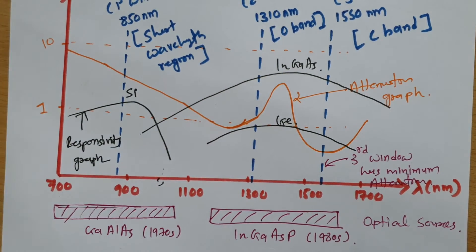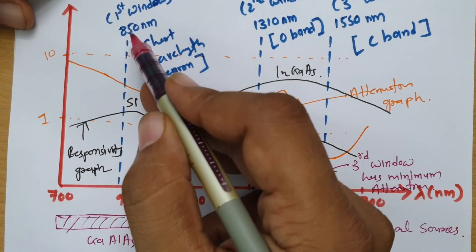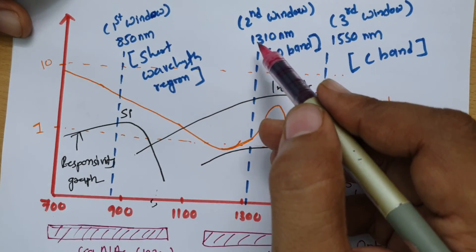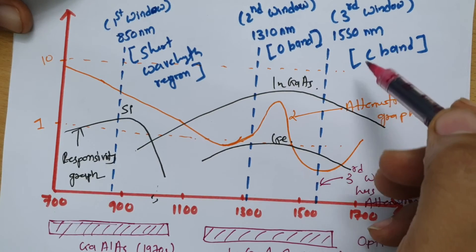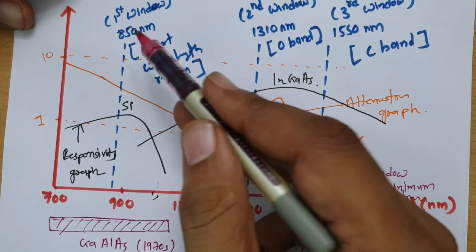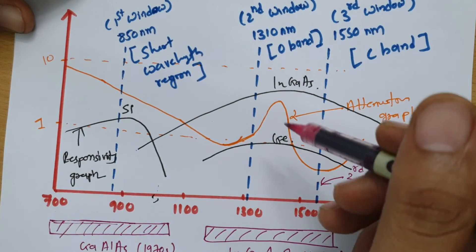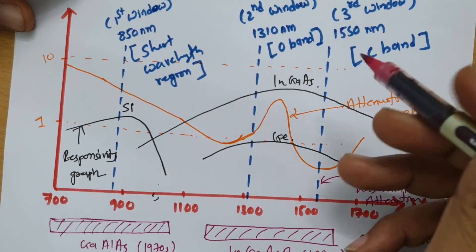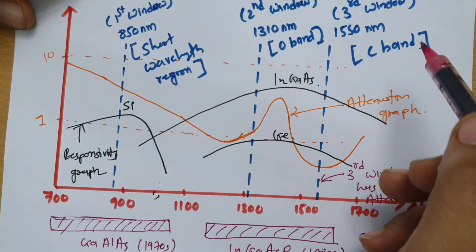To summarize the three windows: the first window at 850 nanometers is the short wavelength region, used in the early 1970s. The second window at 1310 nanometers is the O-band. The third window at 1550 nanometers is the C-band. As devices and materials advanced, people moved from 850 nanometers to 1310 nanometers and 1550 nanometers.